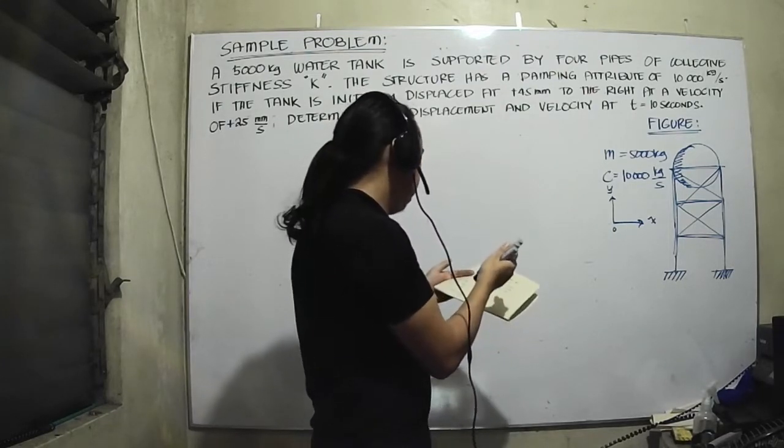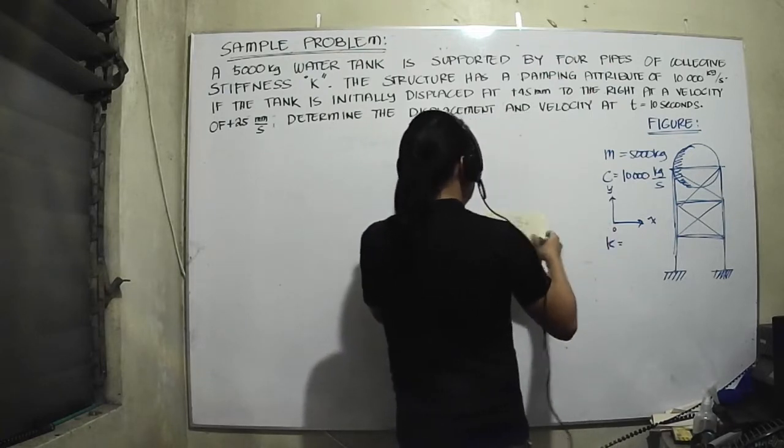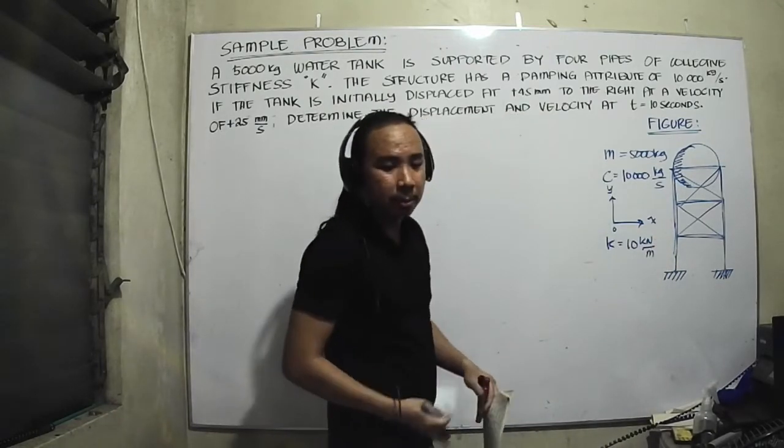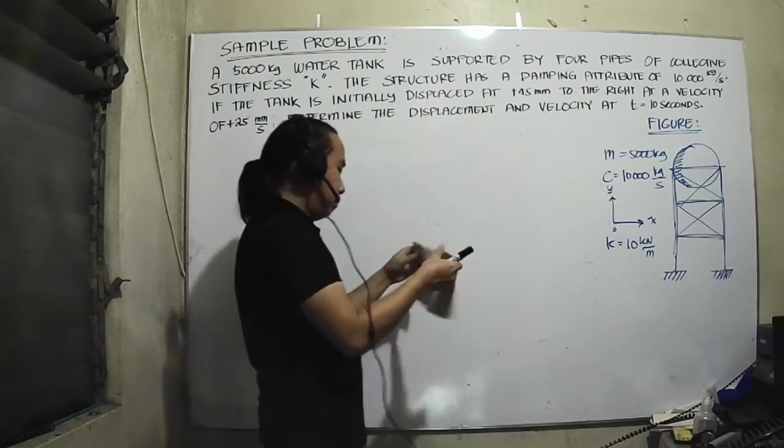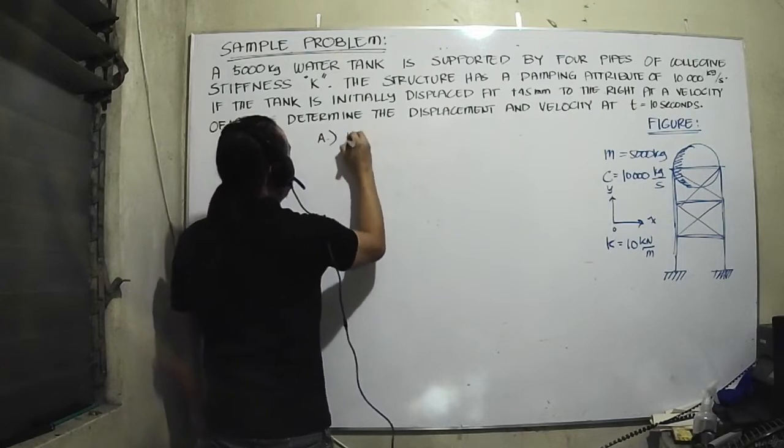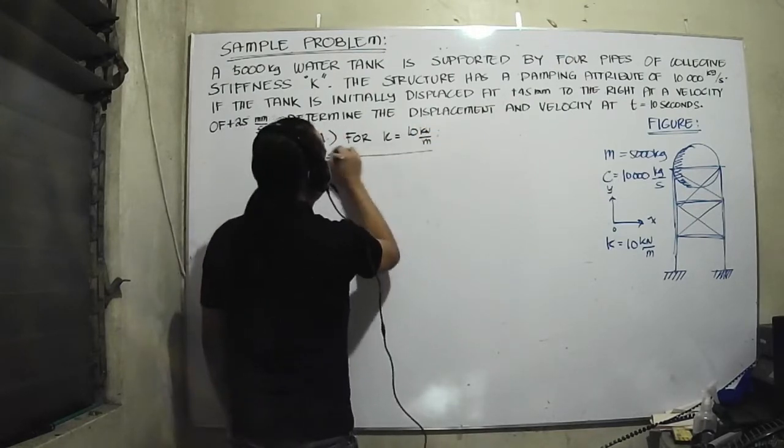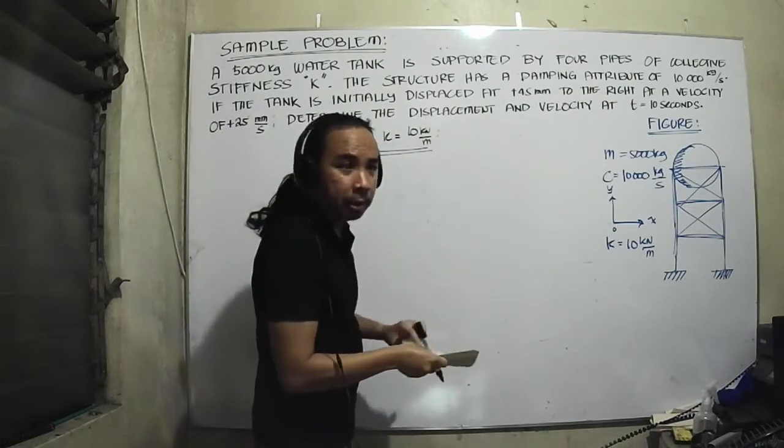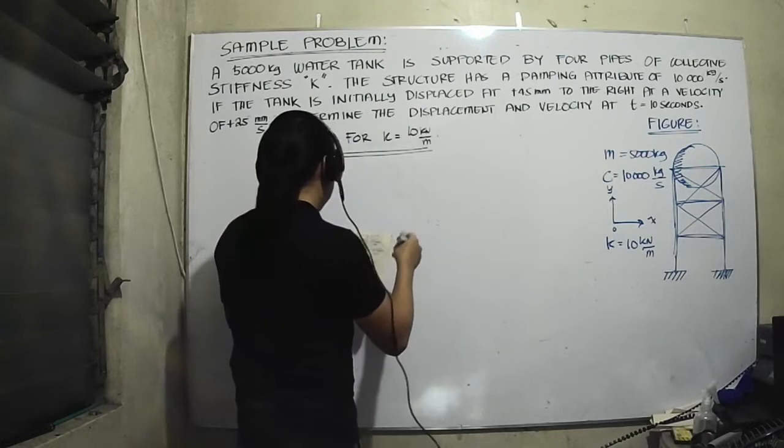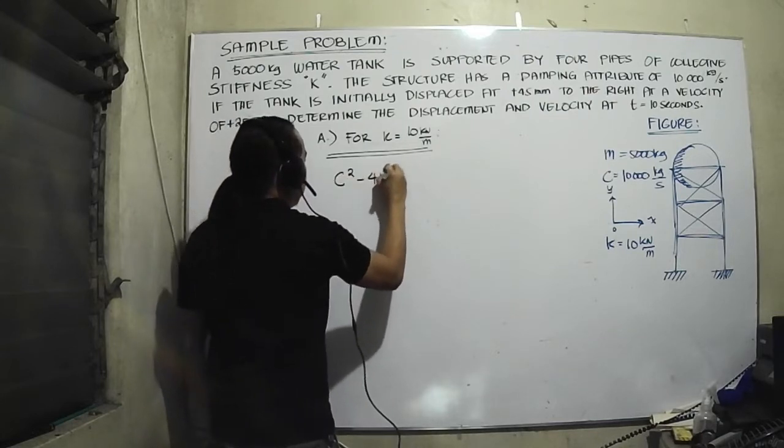Let's try solving this problem by using a value of K equal to 10 kilonewtons per meter for the stiffness. Let's examine the result we get. First, we need to identify what kind of system we are dealing with. I would like to test this using c squared minus 4mk.